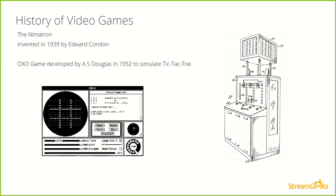The very first computer game ever made was called the Nimitron and it was released at the 1939 World's Fair in Queens, New York. The inventor Edward Condon created the game based on an ancient mathematics strategy called Nim — a game where two players take turns removing sticks from a pile, with the object being to force the other player to remove the final piece. While early games like Nimitron may seem basic compared to today's multiplayer online phenomenons, this is where it all started.